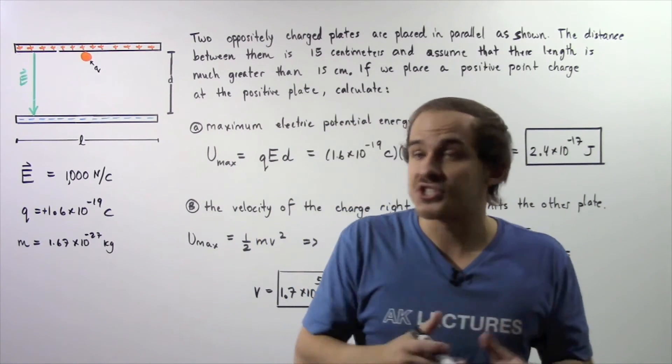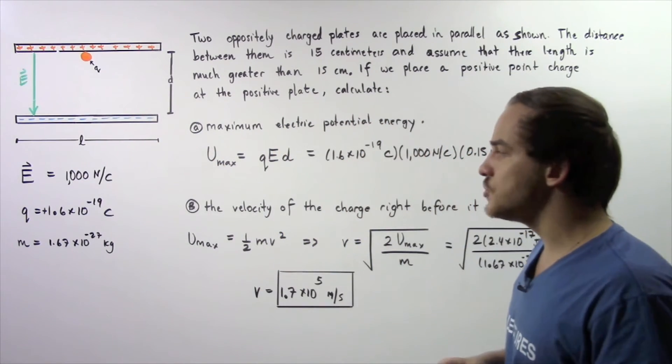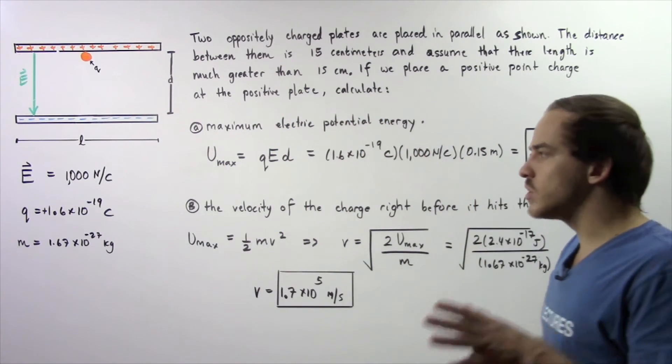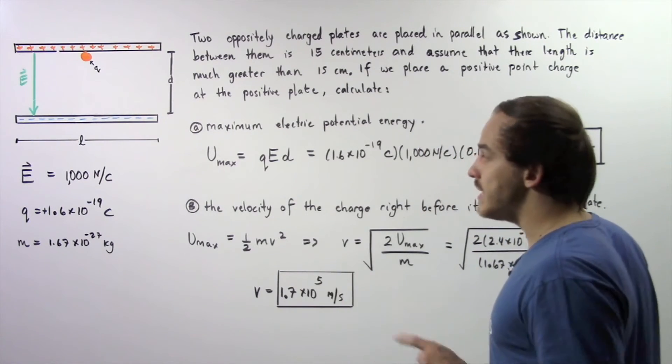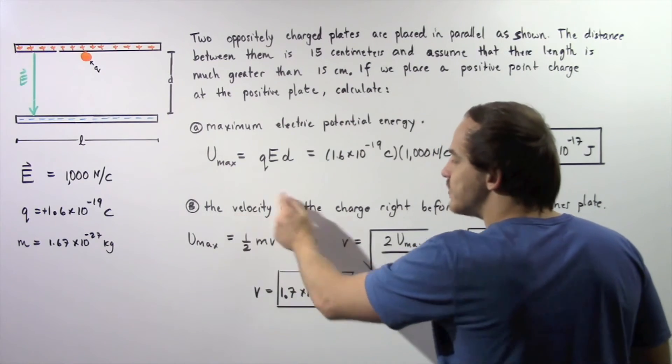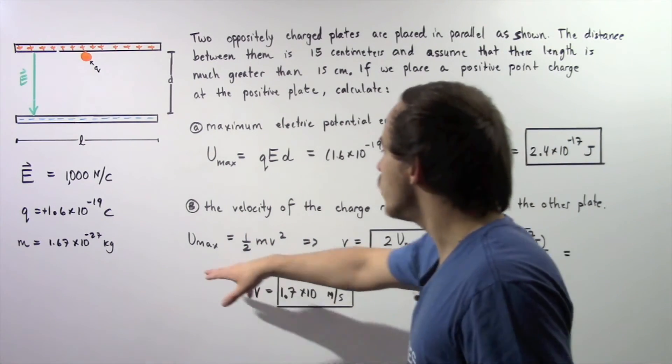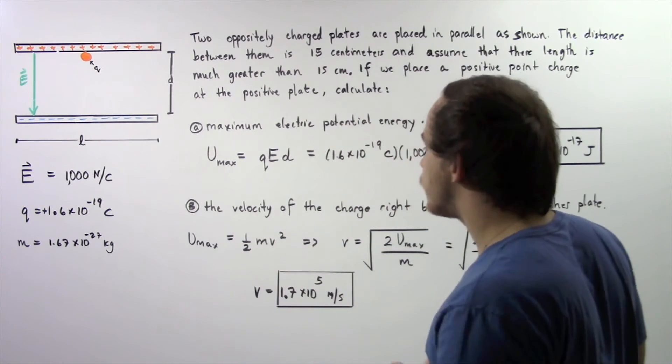Right before it hits this plate, all of that electric potential energy has been transformed into kinetic energy. That means we equate U max to our kinetic energy equation, 1 half m V squared. We take this and solve for our V.